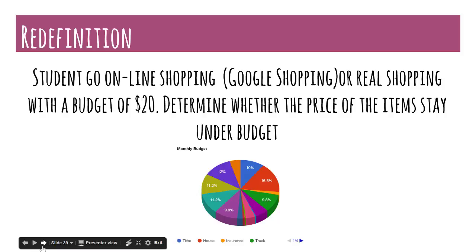Real life connections in redefinition and student choice is the driving force in this lesson. Students can explore a Google Shopping search and purchase, quote unquote, items within a $20 limit. Google Sheets may be helpful in keeping track of these items and rounding to the nearest tenth place. This redefined objective is another example of how higher level thinking fosters necessary life skills.